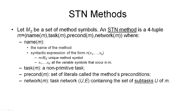I will start with the formal definition of an STN method. The first thing we need is a set of symbols that we can use to denote and name these methods uniquely. These symbols will be disjoint from all the other symbols we've used. An STN method is a four-tuple, consisting of four things: the name, the task, the preconditions, and the network.